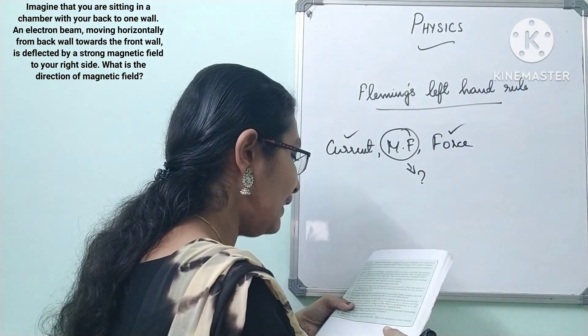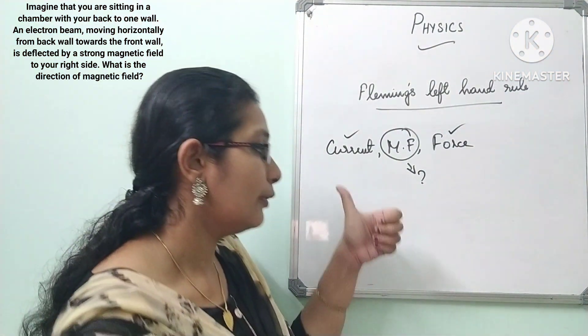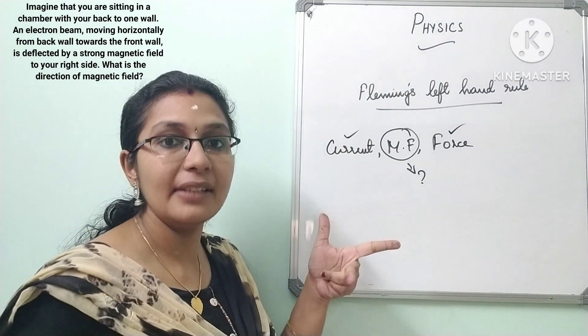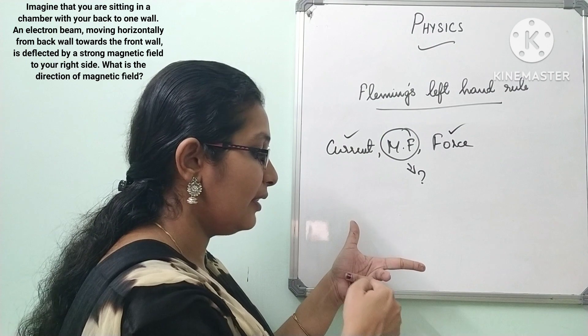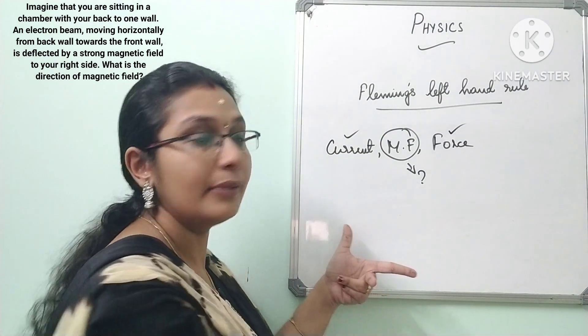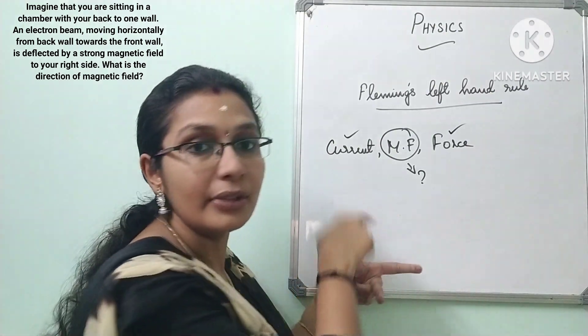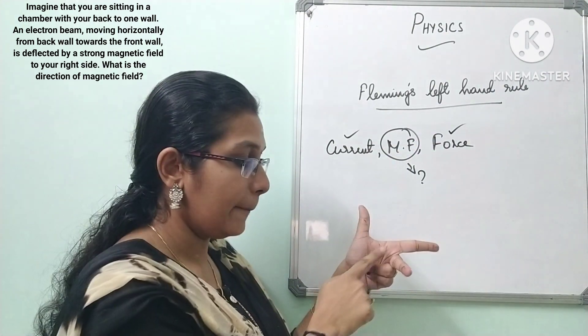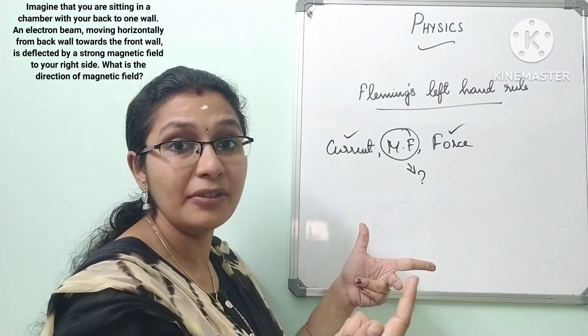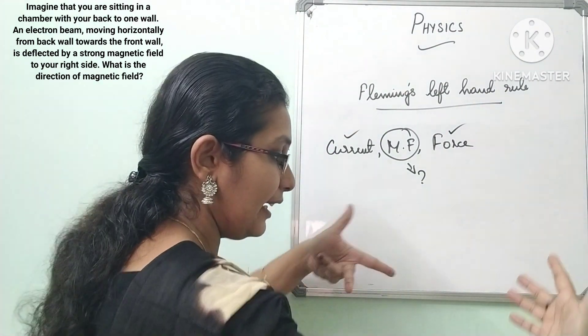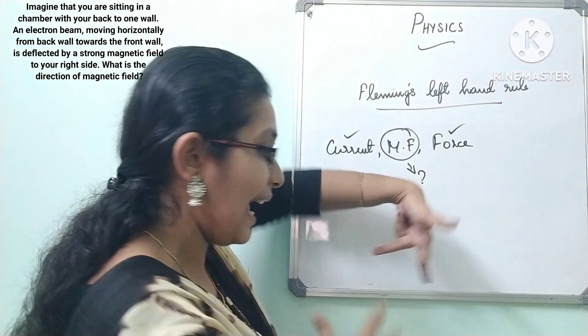It is deflected, which means the direction of force is to my right side. So first, stretch the three fingers according to Fleming's left hand rule in mutually perpendicular directions. What is given? Current direction is from front to back, because electron direction is from back to front. And the direction of force is to your right side. Shift and see. Turn your hand and see.